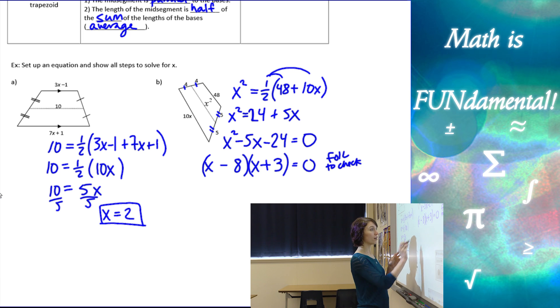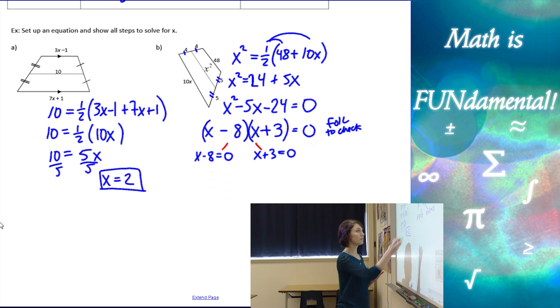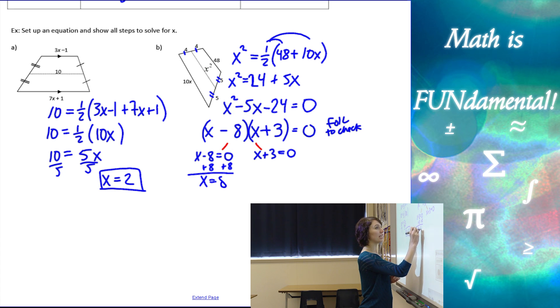Now, from here, to solve, we use what's called the zero product property, which is x minus 8 equals zero, and x plus 3 equals zero. So, we can just split them up, and set each one of them equal to zero, and solve. So, if I add 8, I have x equals 8, and if I subtract 3, I have x equals negative 3.